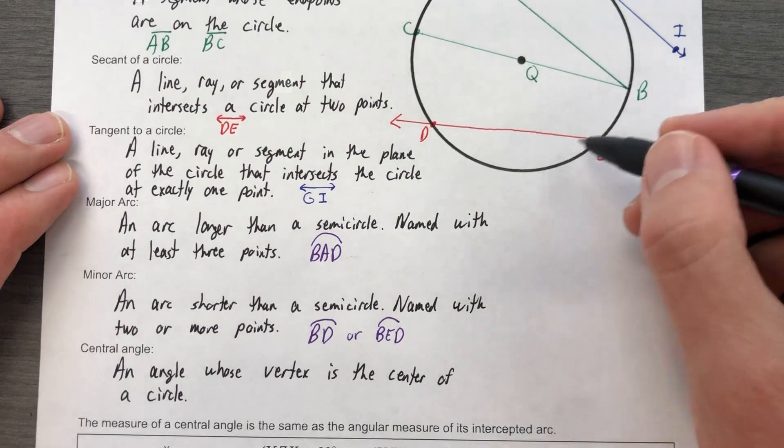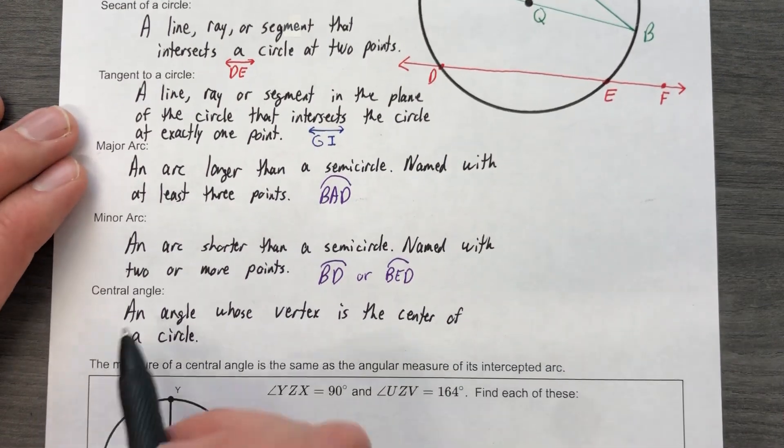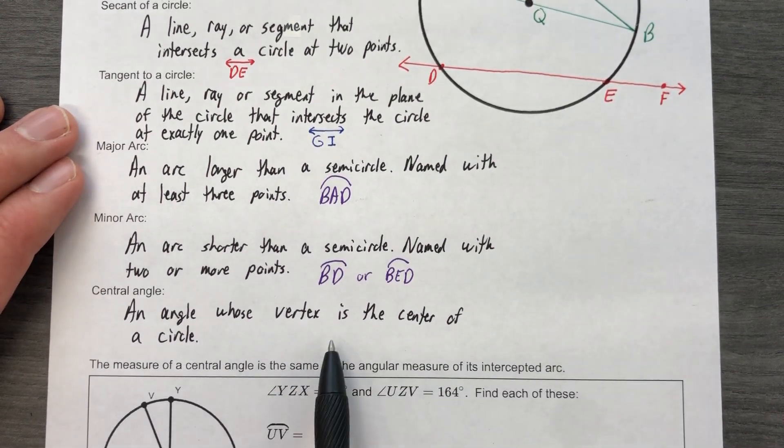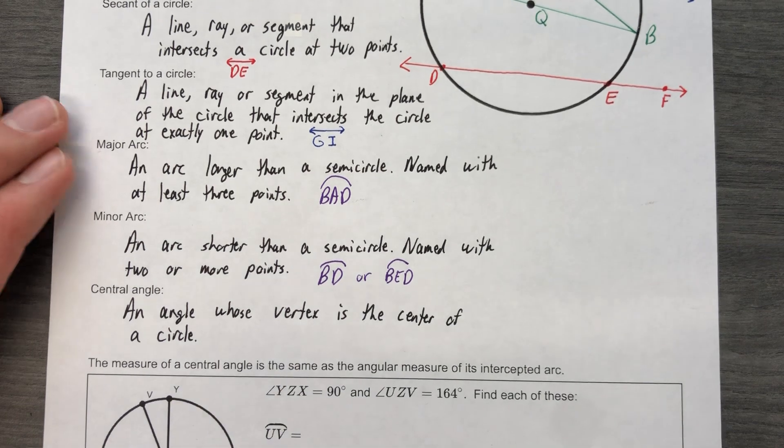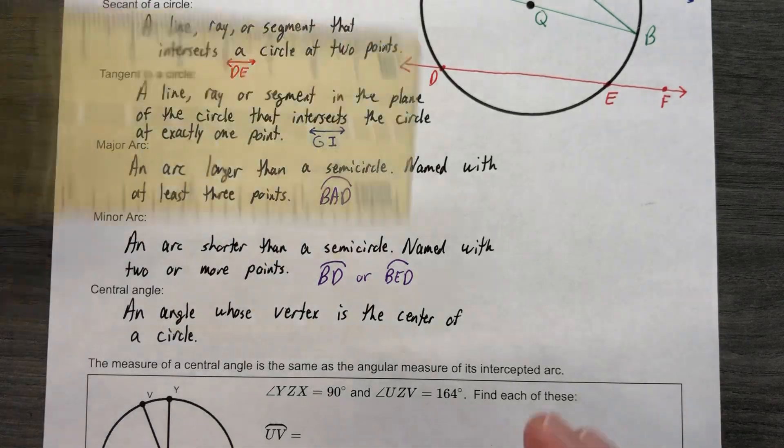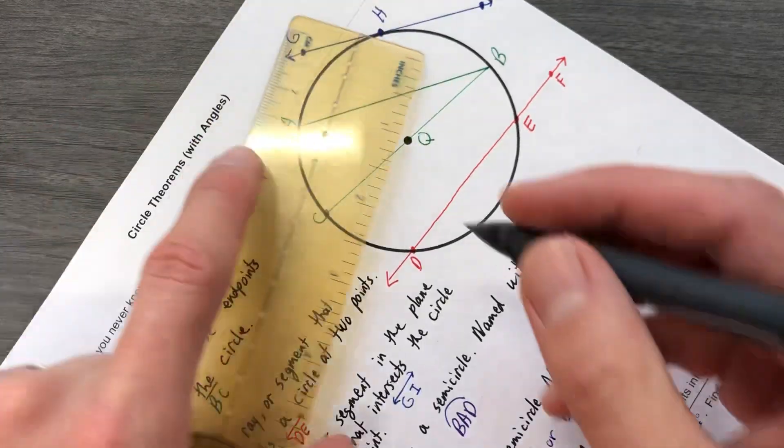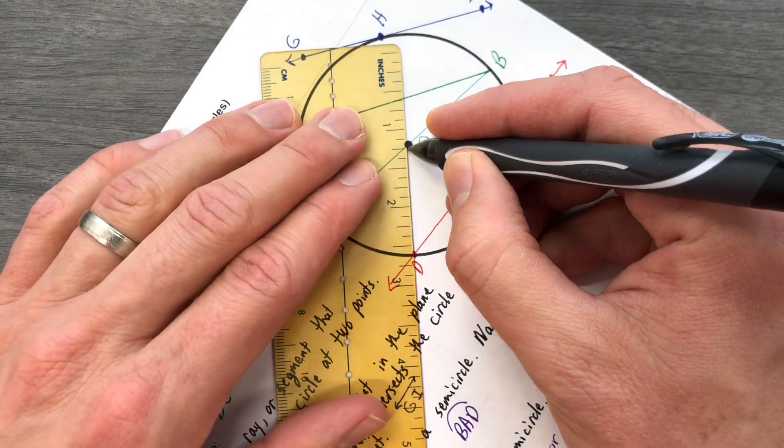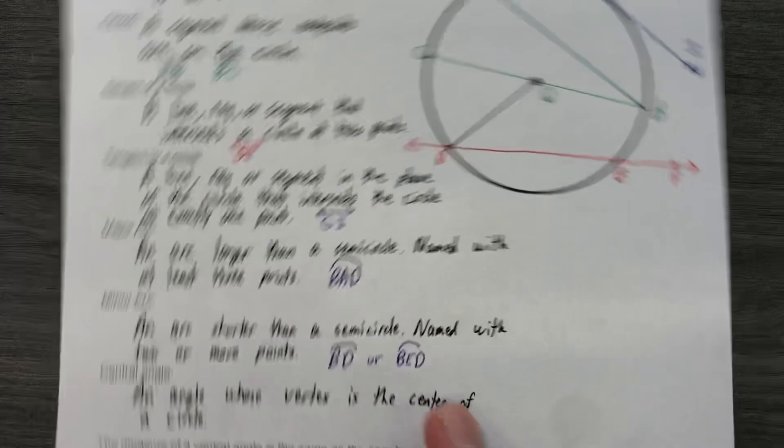So central angle is an angle whose vertex is the center of a circle. What in the world does that mean? What it really means is this: I could draw an angle at Q, and I'm gonna just draw a little bit right there. So there is an angle at Q.